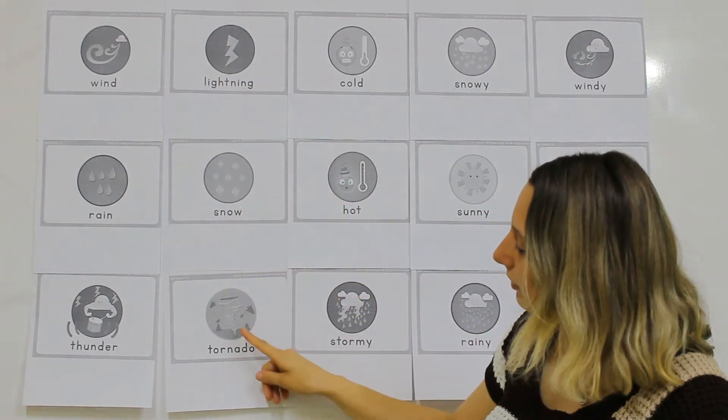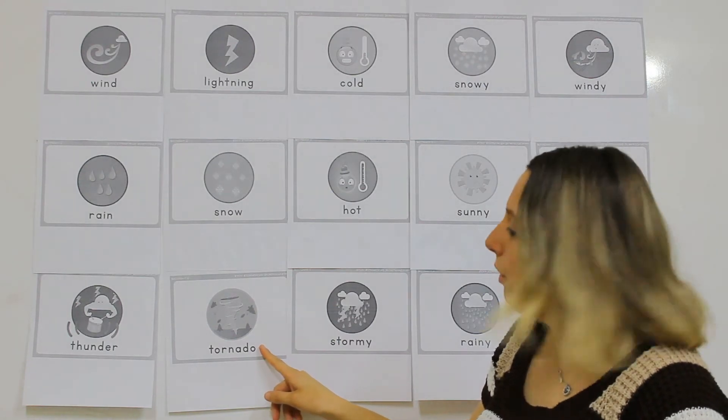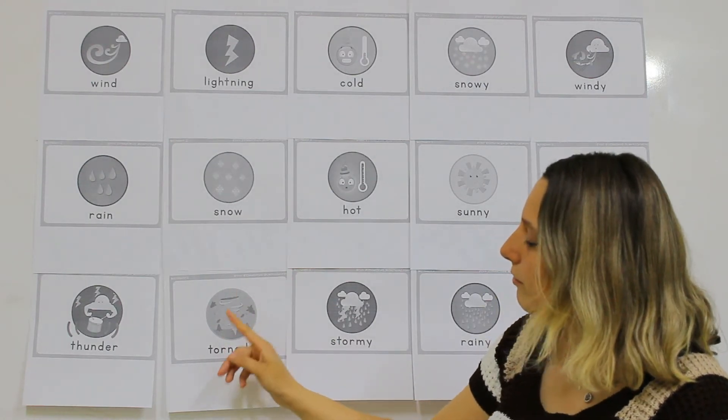Snow, a tornado, which has wind going round and round and round.